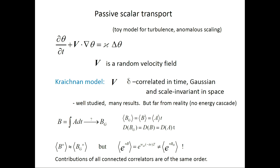Now we pass on to passive scalar transport. Theta is the density of passive scalar, V is a random velocity field assumed to be given. The Kraichnan model assumes that velocity is delta-correlated in time and Gaussian. This model is very well studied with very many results, but its drawback is that it is rather far from reality — for example, in this model there can be no energy cascade because of time reversibility.